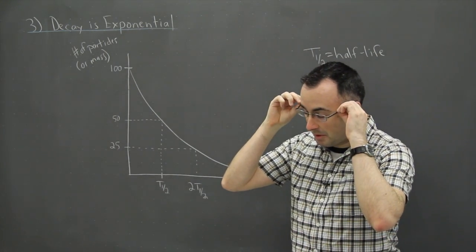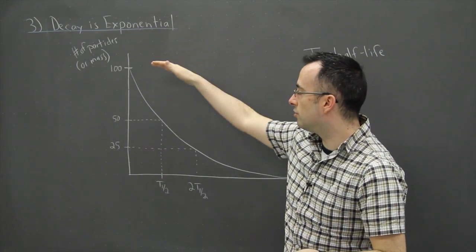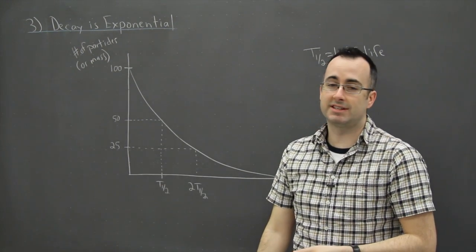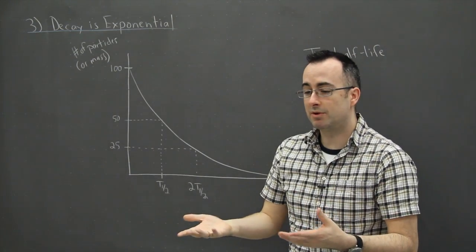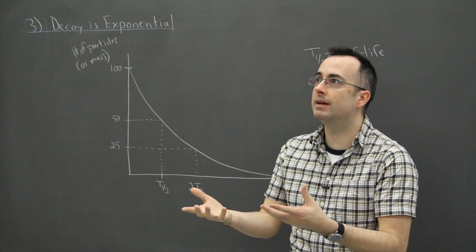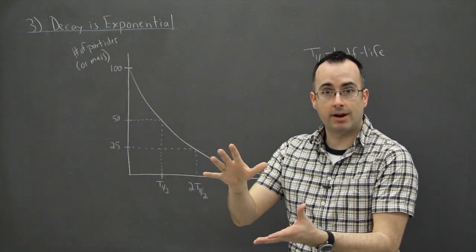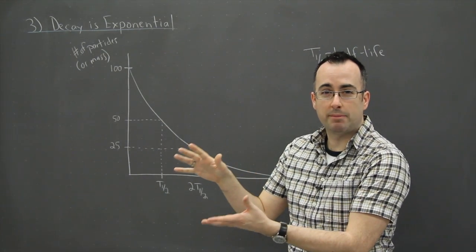Those are things that are radioactive for a very long time, which means they have a very long half-life. That means it takes millions or even billions of years just to go to half the number of particles there were. Which means those things, it's very difficult to get rid of them.